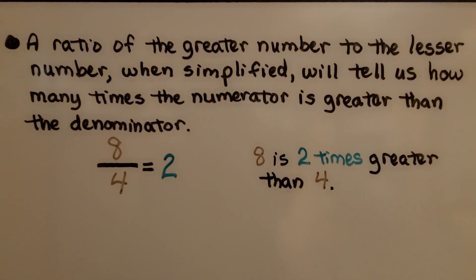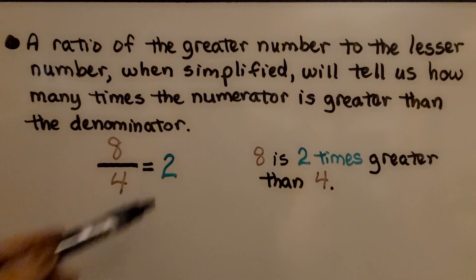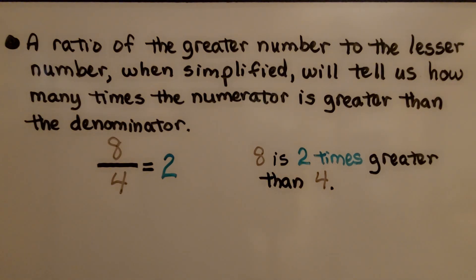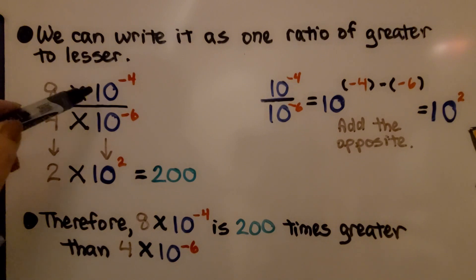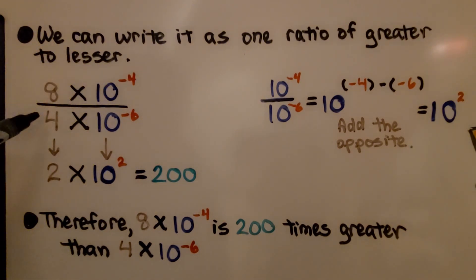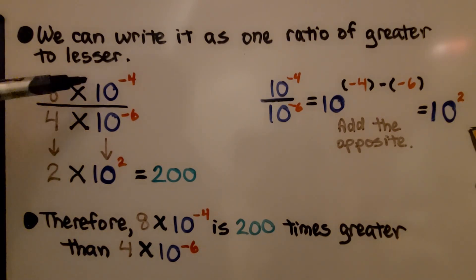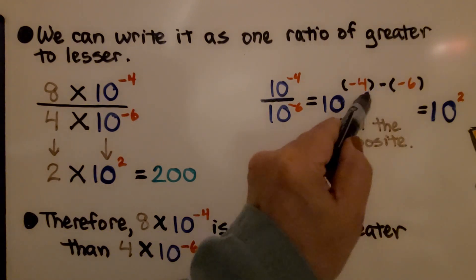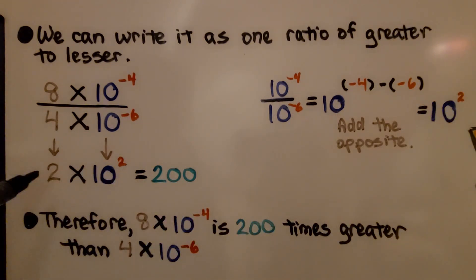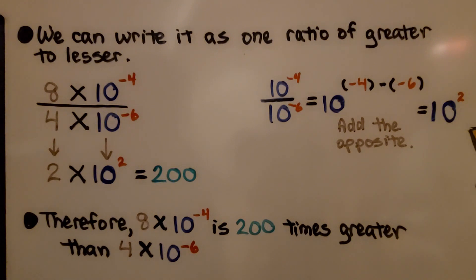A ratio of the greater number to the lesser number, when simplified, tells us how many times the numerator is greater than the denominator. We can write it as one ratio of greater to lesser: 8 times 10 raised to the negative 4th power over 4 times 10 raised to the negative 6th power. We do 8 divided by 4, which is 2, and negative 4 minus negative 6 — adding the opposite — gives us positive 2, so 10 to the second power. And 2 times 10 to the second power is 200. Therefore, 8 times 10 raised to the negative 4th power is 200 times greater than 4 times 10 raised to the negative 6th power.